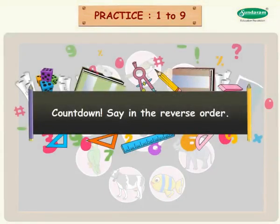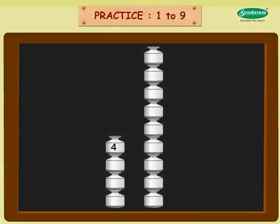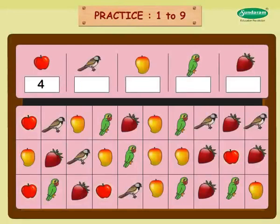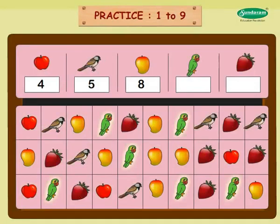Countdown. Say in the reverse order: four, three, two, one. Nine, eight, seven, six, five, four, three, two, one. Look at the picture above each box — how many times do you find that picture in the chart? Count and write in the box. Four, five, eight, six.